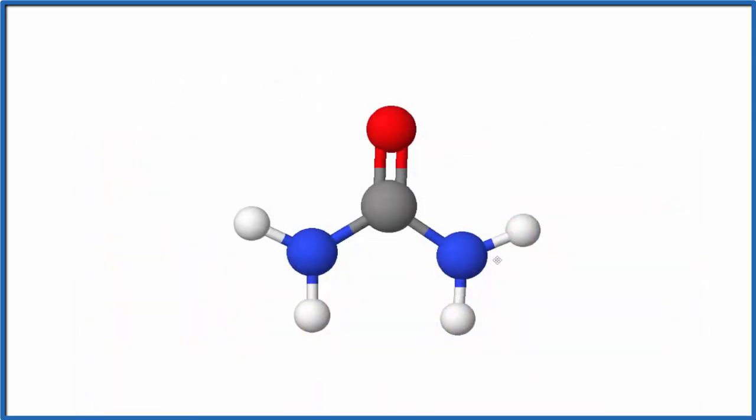So here's our molecule of urea. In the center, we have the carbon. The red, that's the oxygen. The blue, nitrogen. Whites are hydrogen.